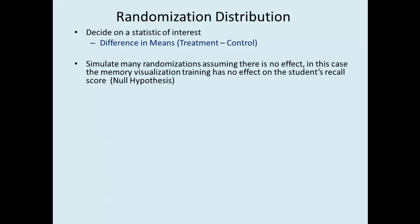We'll simulate many randomizations assuming there is no effect. In this case, no effect would be that memory visualization training has no effect on the student's recall score. This is called the null hypothesis.